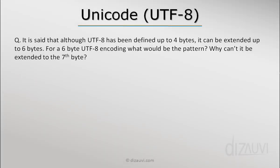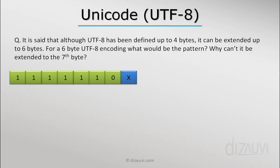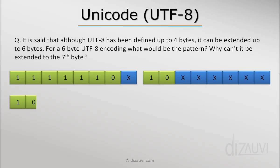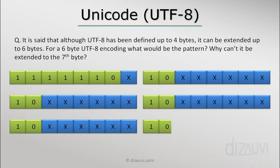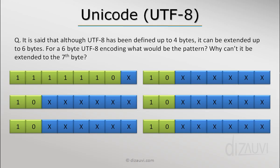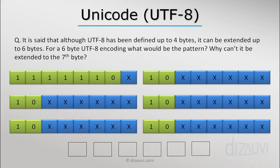The second quiz question: what would be the byte pattern if six bytes were used? Following the pattern, the leading byte should have six ones followed by a zero, then five continuation bytes each starting with 1-0. The bytes are laid out linearly in memory, though shown in a grid format here due to space constraints.